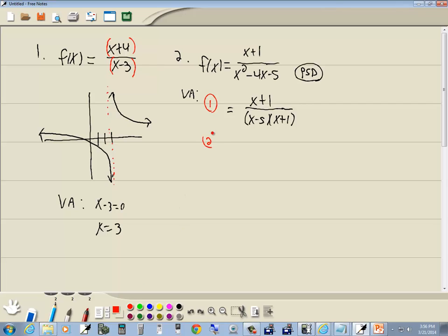Step 2, cancel. Well, we've got an x plus 1 here and x plus 1 here, so those are going to cancel, and we've got 1 over x minus 5. Then for our vertical asymptote, you set your denominator equal to 0 and solve it. So we've got x minus 5 equal to 0, or x is equal to 5.